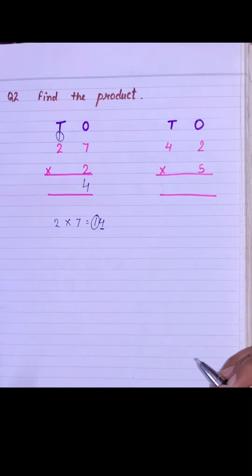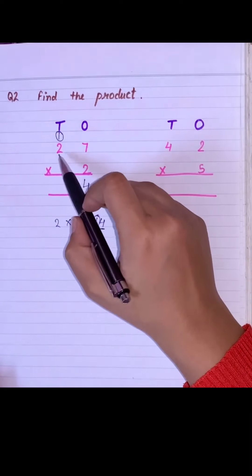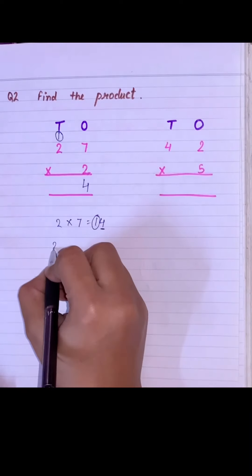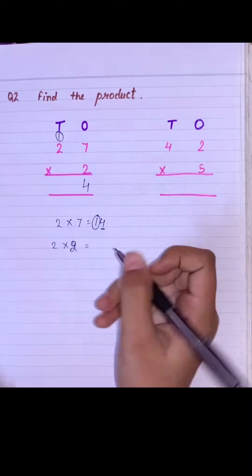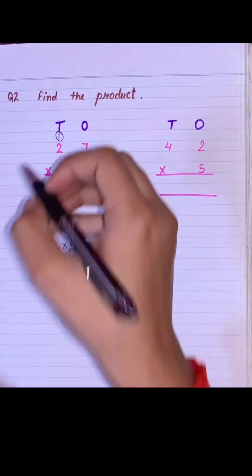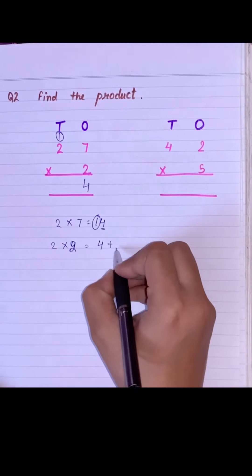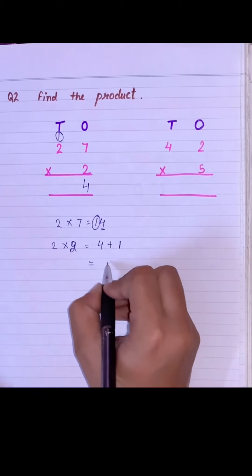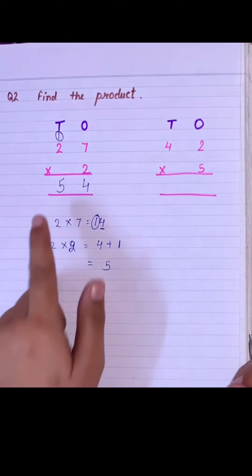Our second step will be to multiply the tens place with 2, so 2 multiply by 2 will be 4, and we will add the carry over to the product, so we will get 5. Our answer is 54.